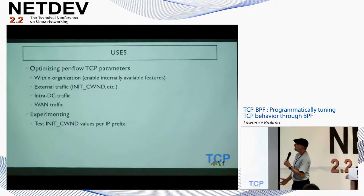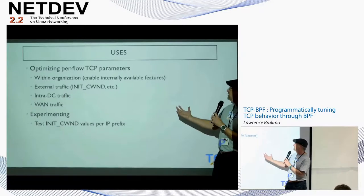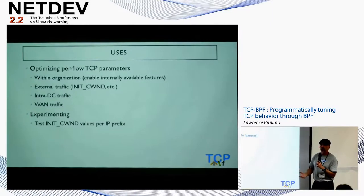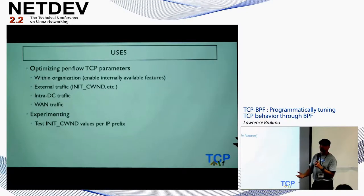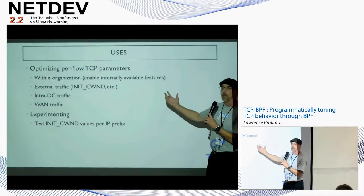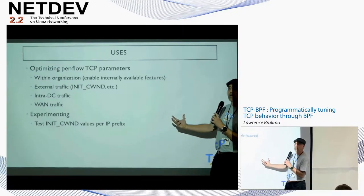The idea is to optimize per-flow TCP parameters. For example, within our organization we could enable new features — like at Facebook we may have some experimental TCP header options, and we only enable them when talking to our own machines. Typically in the past, what we had to do is put rules in the kernel to determine whether we're talking to somebody internally, and these rules would change and prevent us from upstreaming things. With TCP BPF, it's totally separate — it's a BPF program that can make these decisions, and the kernel just queries the BPF program: is this an internal connection? Yes — okay, do these other things.